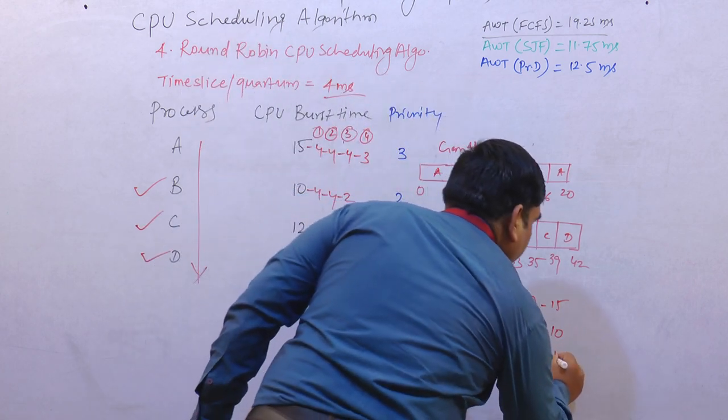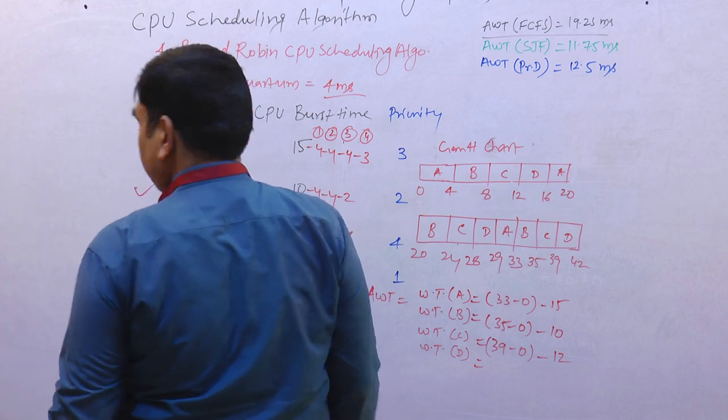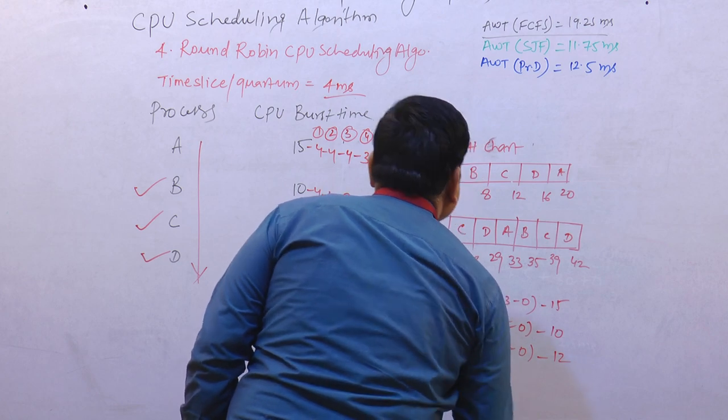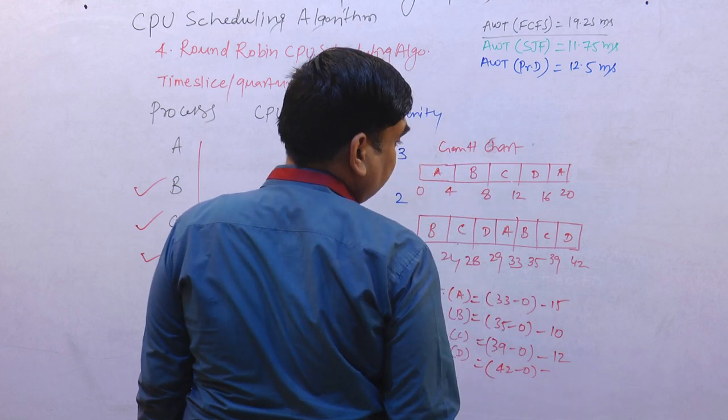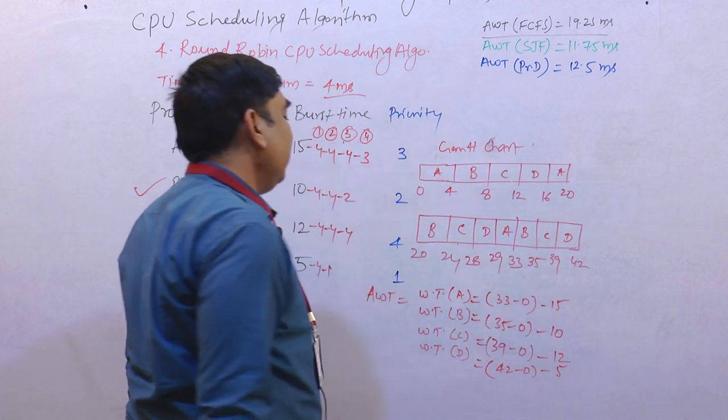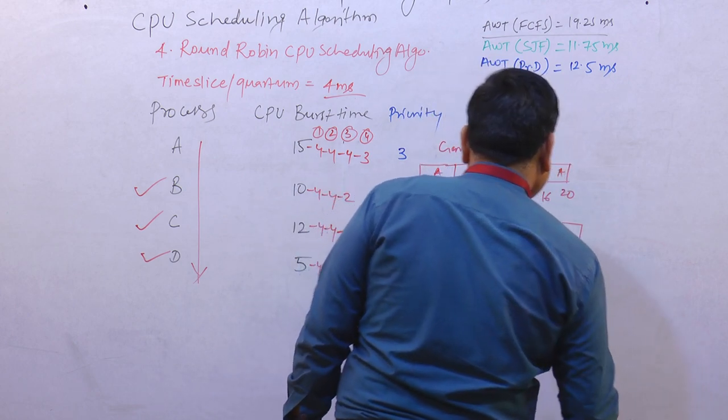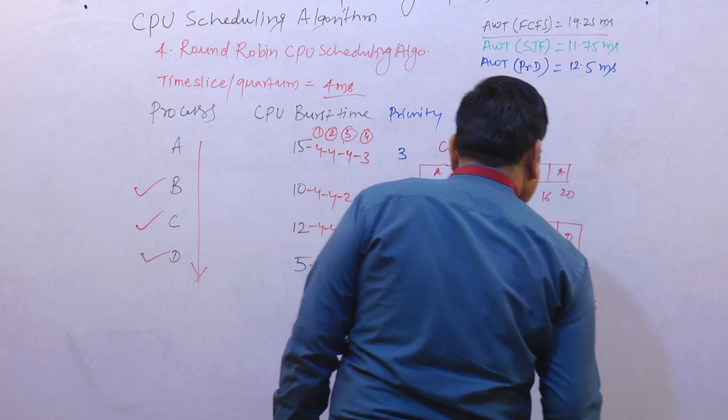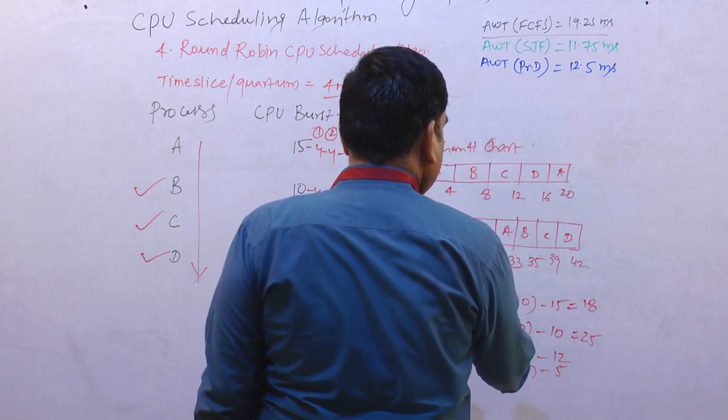Waiting time of D is 42 minus 0 minus 5. So we will calculate the average of all the times. That will be: 33 minus 15 equals 18, 35 minus 10 equals 25, 39 minus 12 equals 27, and 42 minus 5 equals 37.